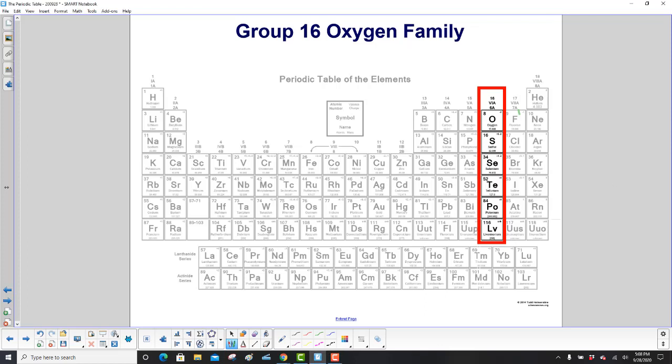Group 16 is the oxygen family, so named for oxygen right here at the top. Sulfur, selenium, tellurium, polonium, and livermorium. And it starts with oxygen at the top.